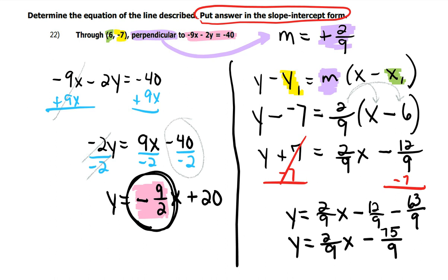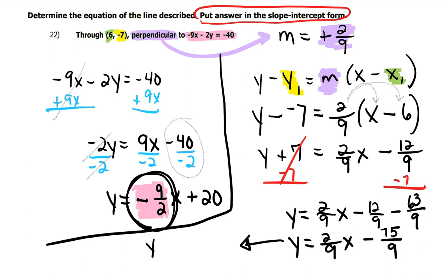But those are both divisible by 3. So I'm kind of running out of room here. Go this way. Okay. So my final simplified answer would be y equals 2 9ths x minus 25 thirds.